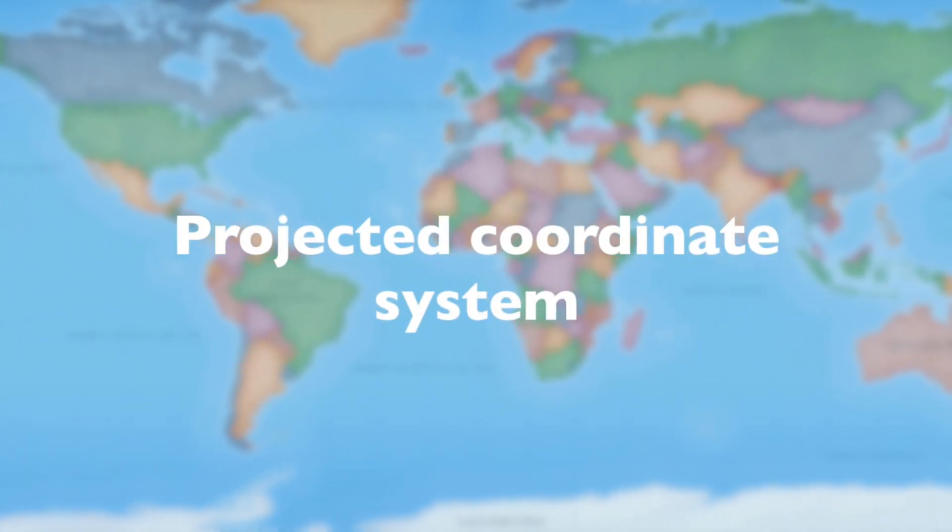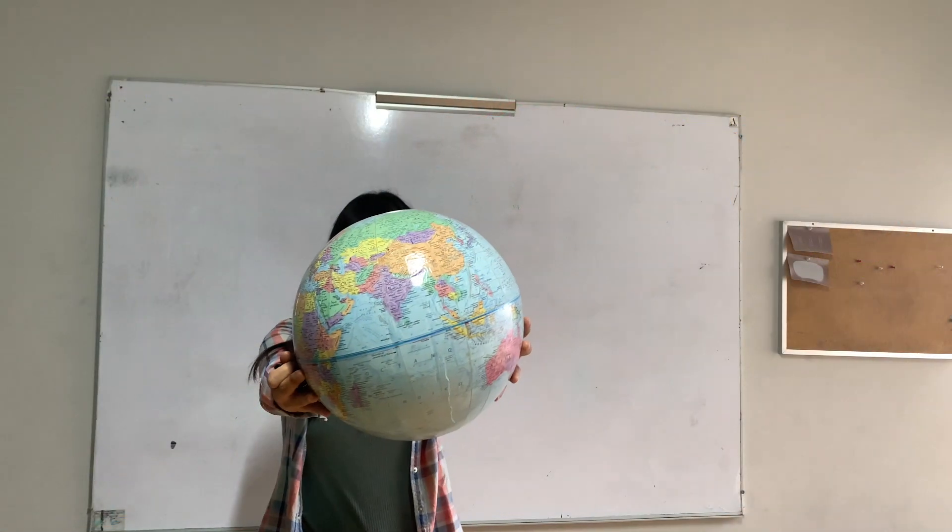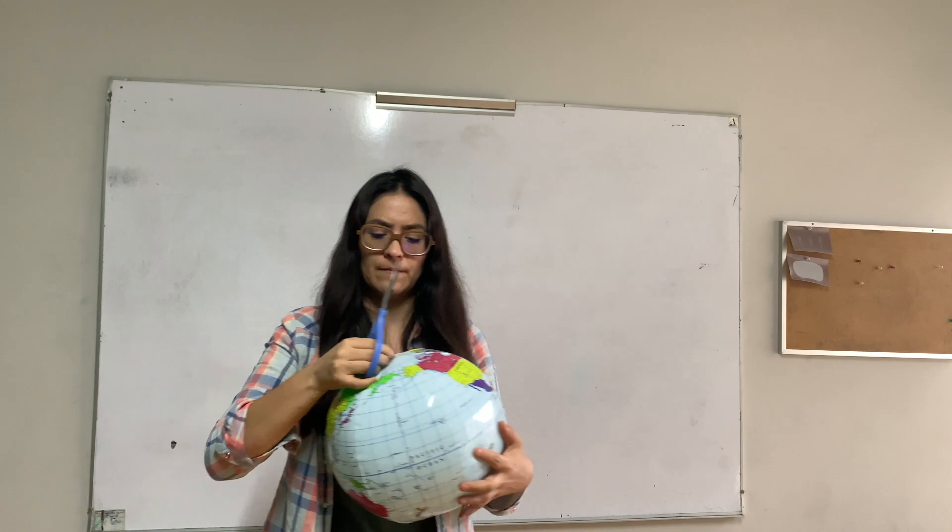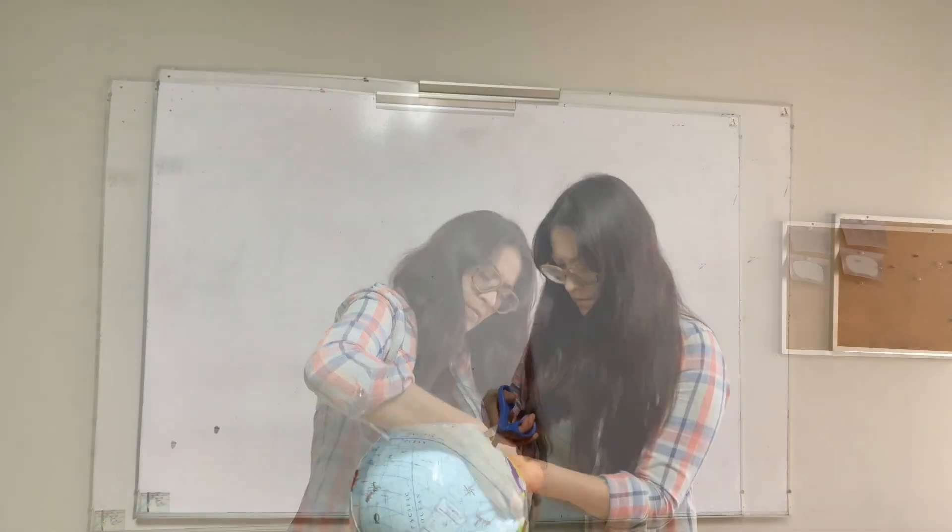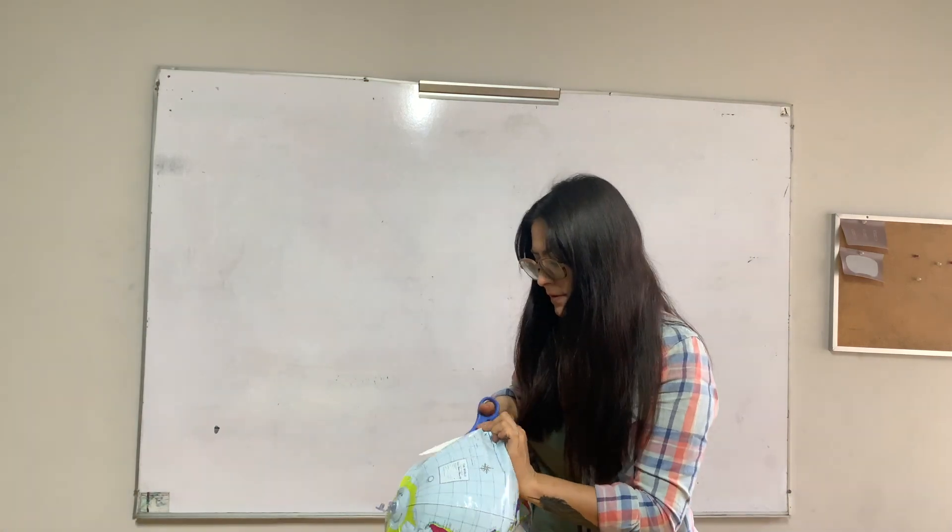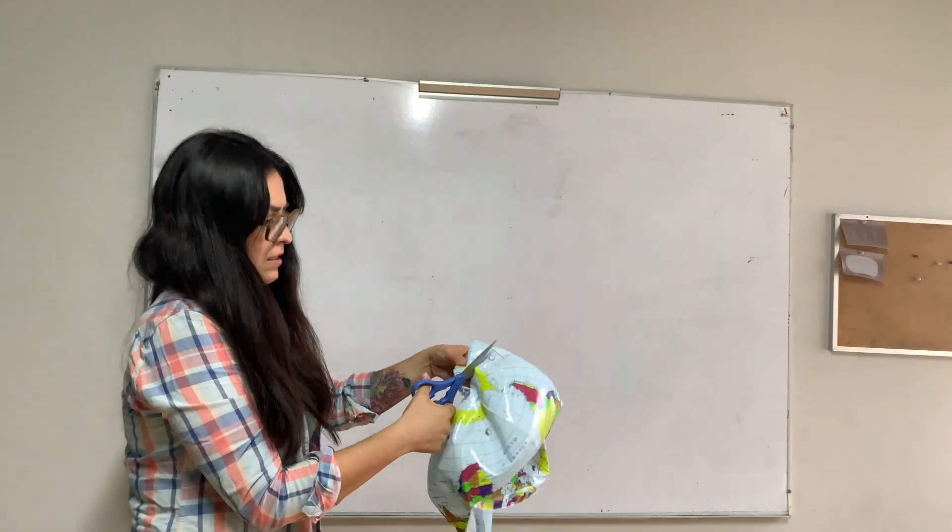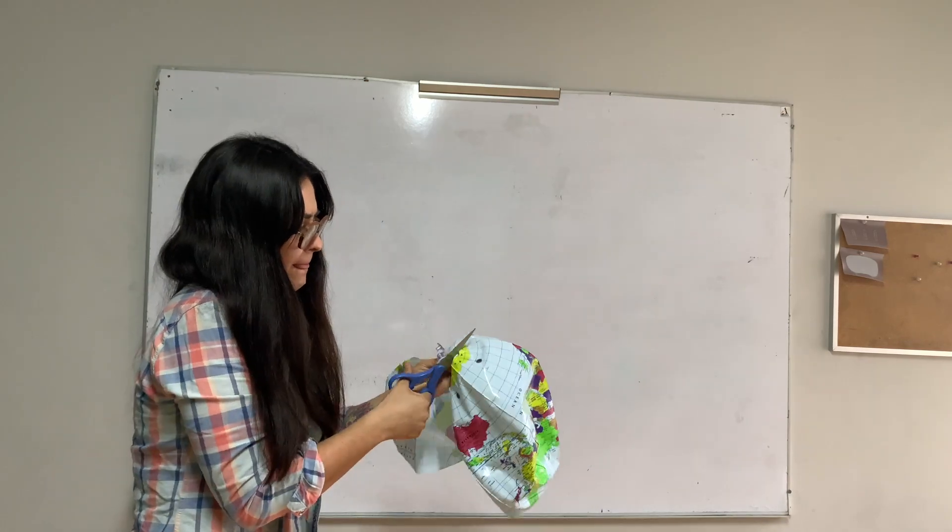Projected coordinate system. Nearly all maps are an attempt to represent our environment in a two-dimensional format. The act of systematically transposing a 3D to a 2D object is called projection, and it's a key concept of cartography, the art and science of making maps.